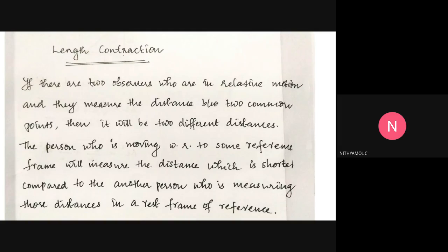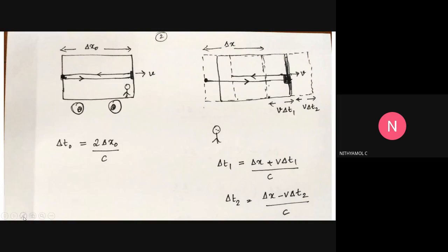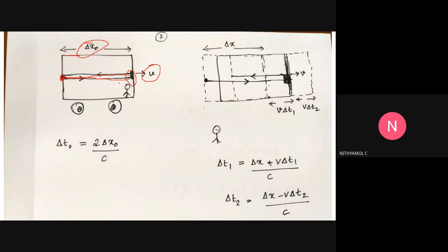Let's take a look at a similar experiment. This is a moving train and it moves with a velocity v. There is a light source — the light beam is emitted. Now let's take a look at a mirror here. The distance between them is delta x0. Now let's observe this event and calculate this length.